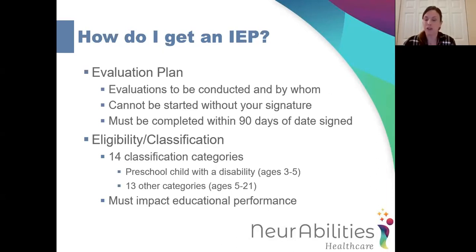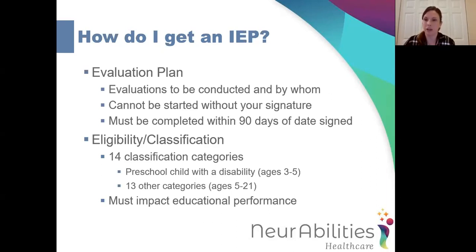At the age of five, your child is no longer eligible under the preschool child with a disability category. The team will re-evaluate and re-classify them under one of the other 13 categories, such as autism, other health impaired, specific learning disability, communication impairment, or multiply disabled. An important thing to note is that just the presence of a disability does not make your child eligible for special education — it must impact their educational performance. For example, a child diagnosed with ADHD who is performing well in school would not be eligible for an IEP.